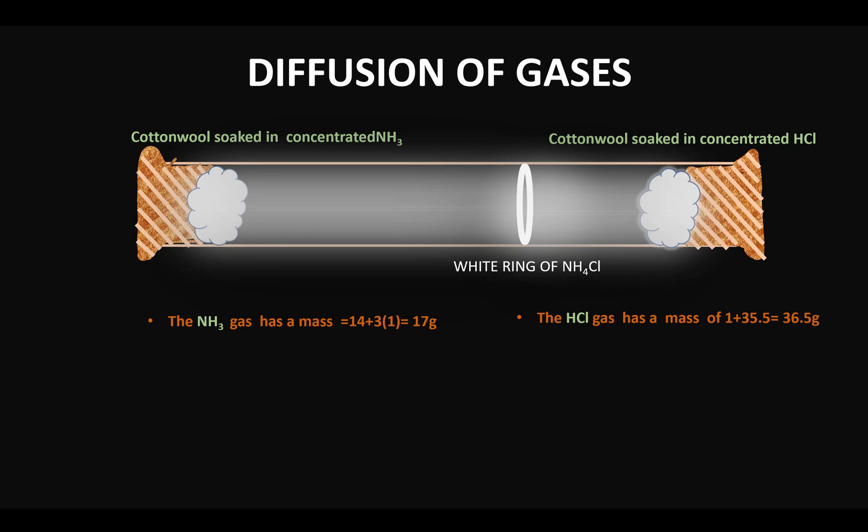So obviously 36.5 grams is greater than 17 grams — that means HCl gas is much heavier compared to ammonia gas, and this explains why the ring is formed towards the cotton wool that is soaked in hydrochloric acid